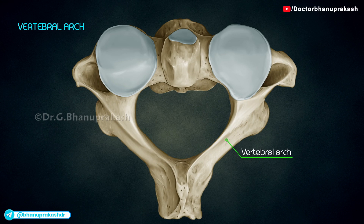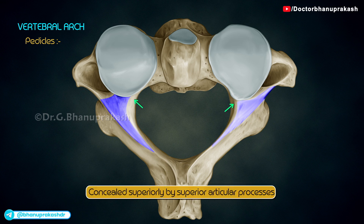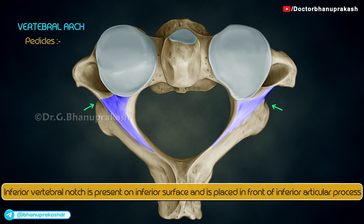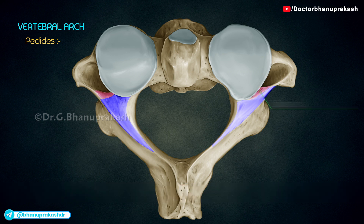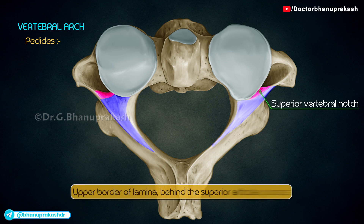Vertebral arch pedicles are concealed superiorly by superior articular processes. A deep and wide inferior vertebral notch is present on the inferior surface and is placed in front of the inferior articular process. A shallow superior vertebral notch is placed on the upper border of the lamina behind the superior articular process.